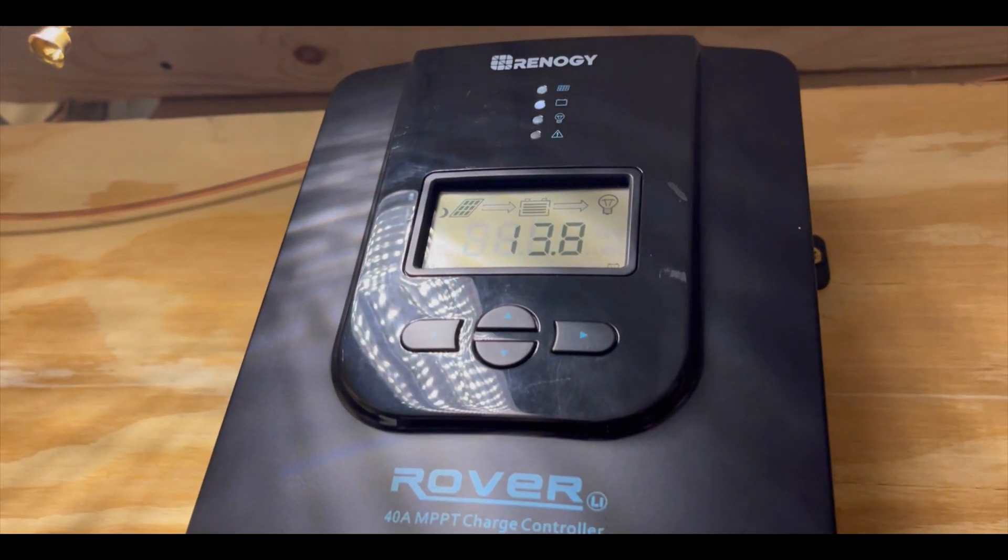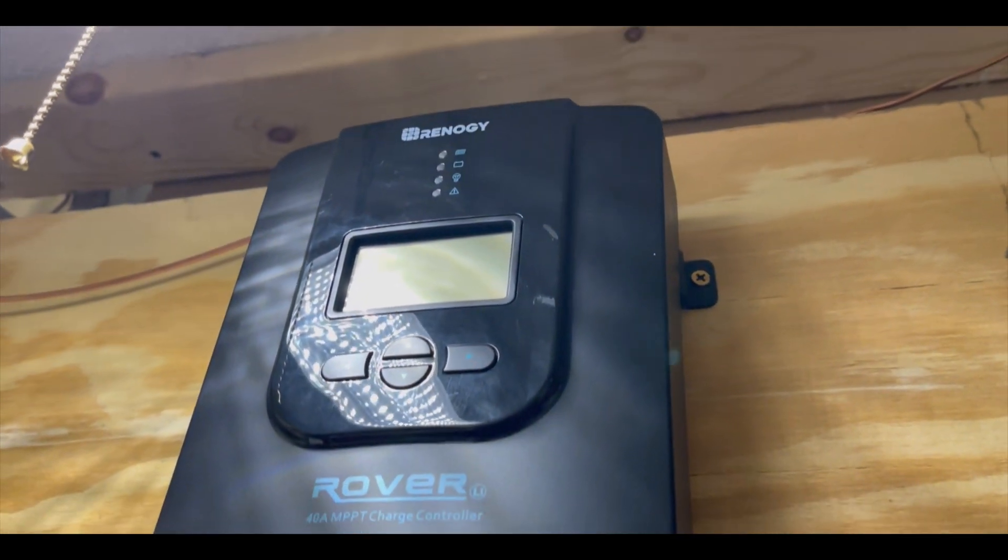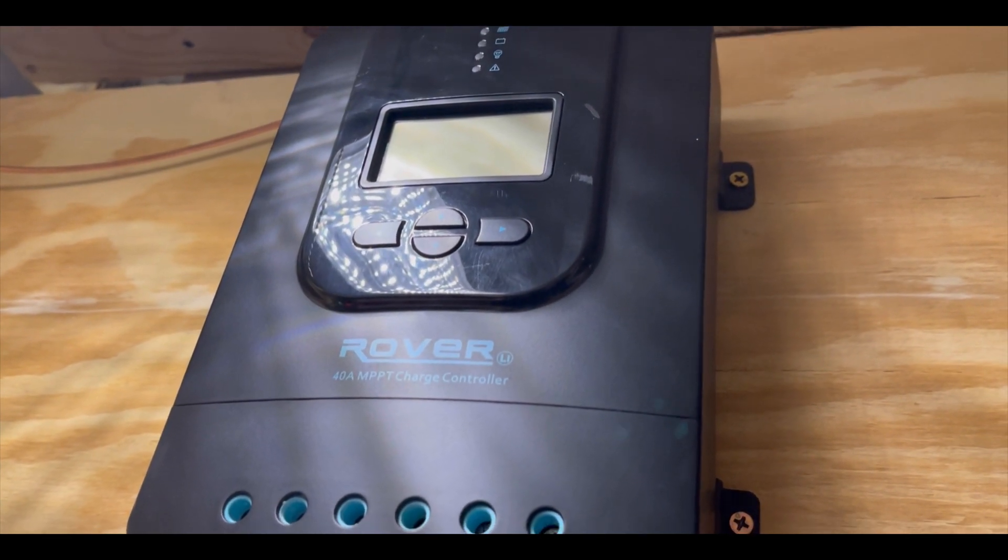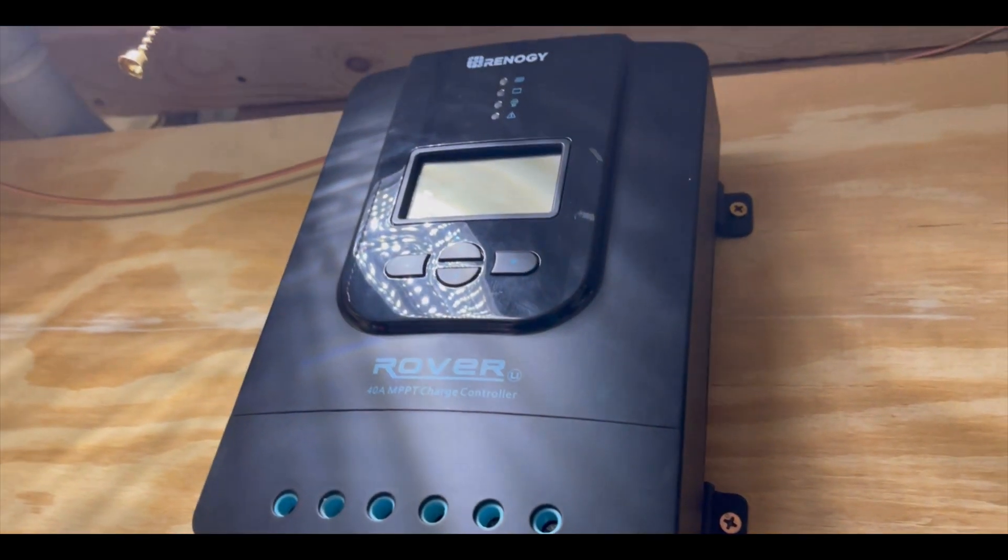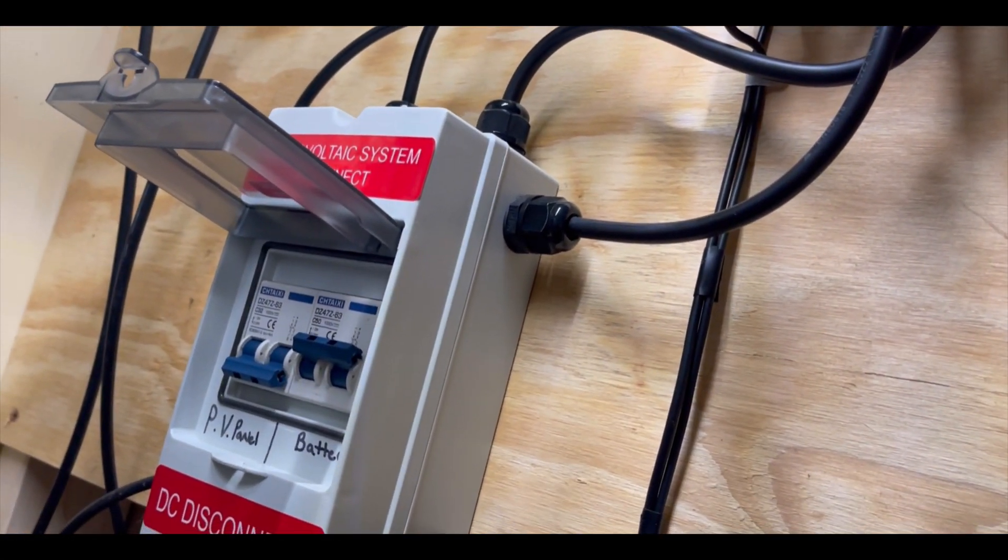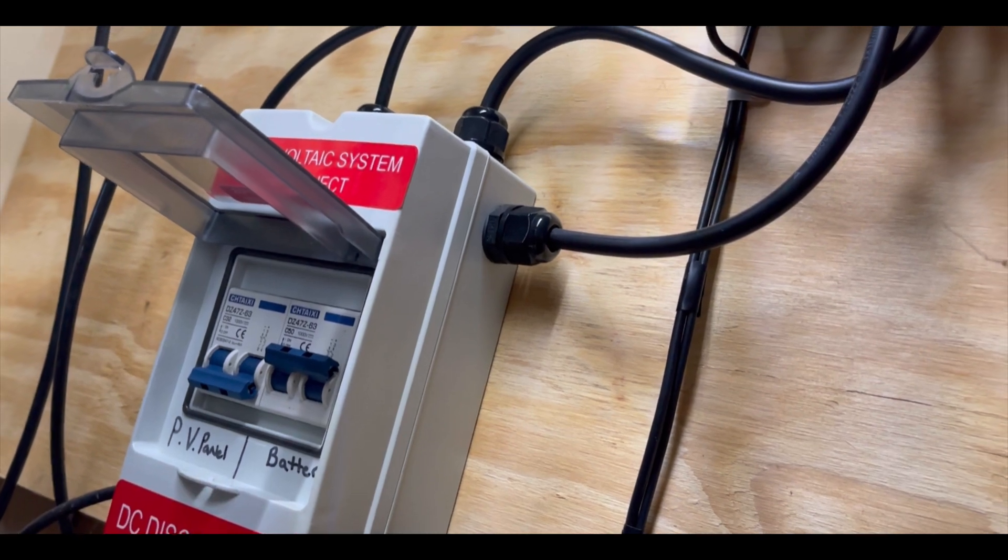We shut the PV panels down and look at that, the charge controller shut off. Interesting. I wonder if the charge controller is bad, so it's going to be between the charge controller and this battery side fuse. We're going to take this cover off first and check with a multimeter.